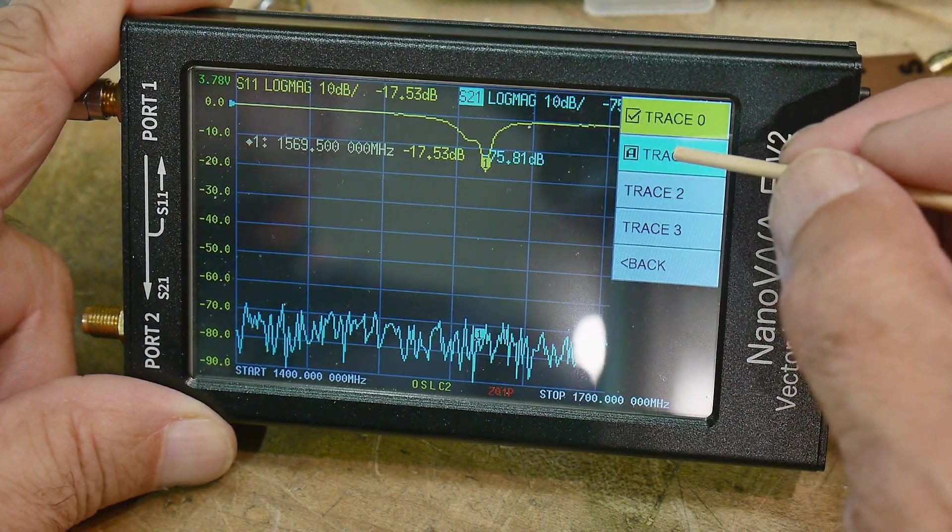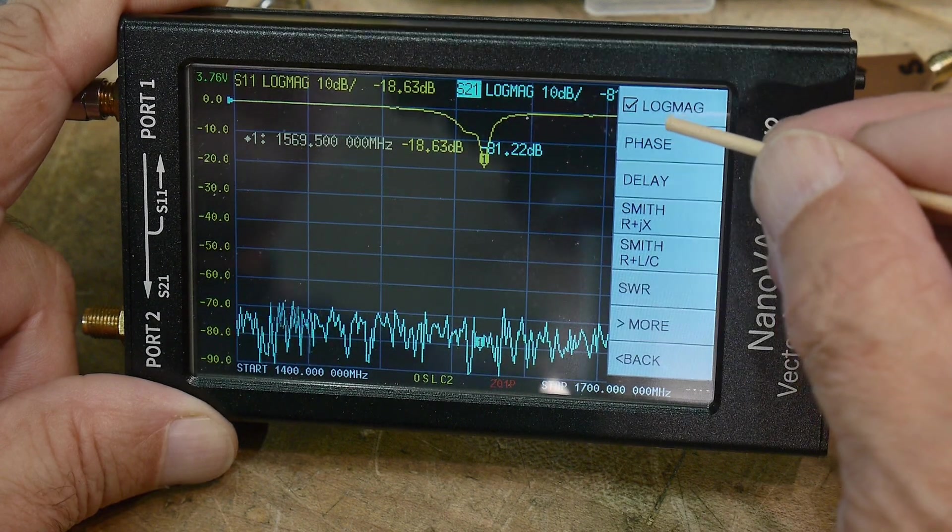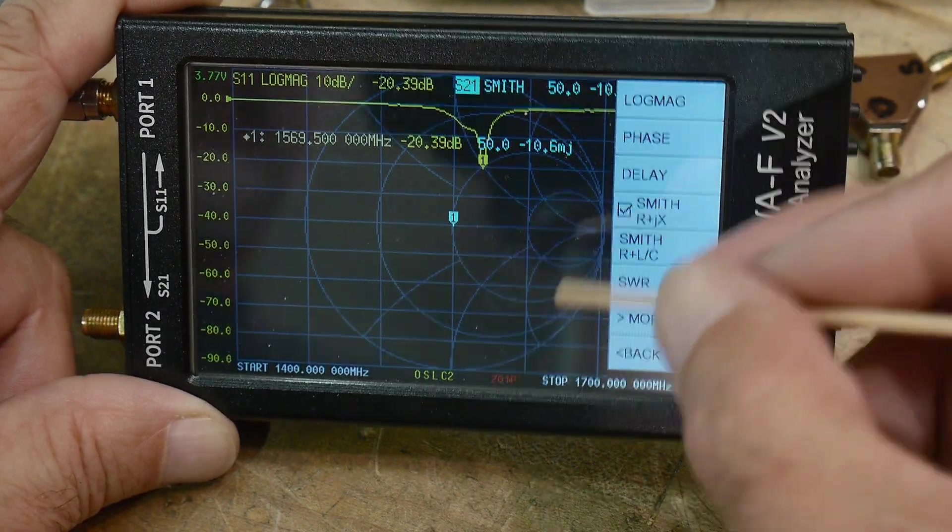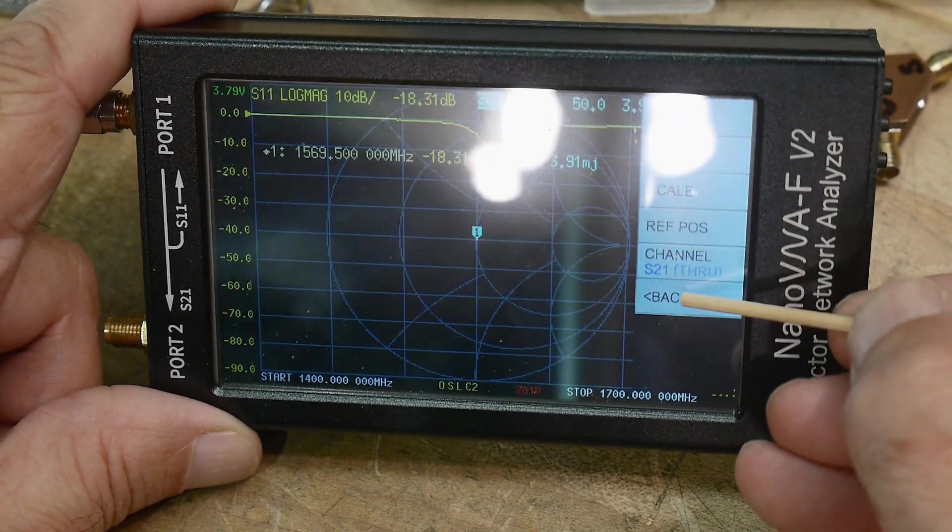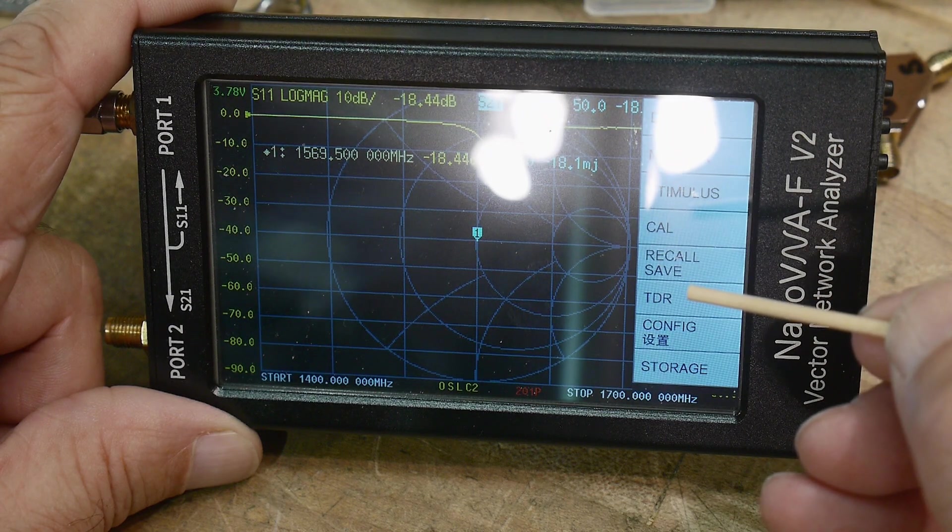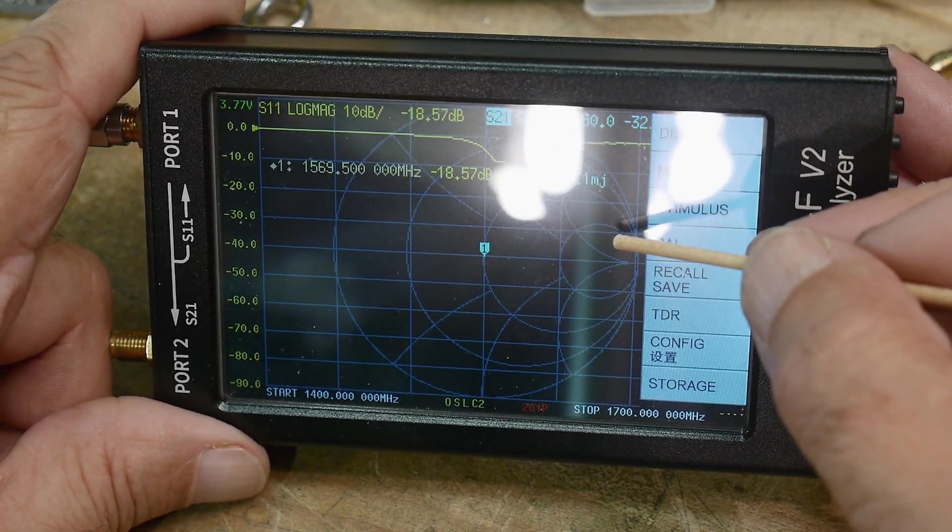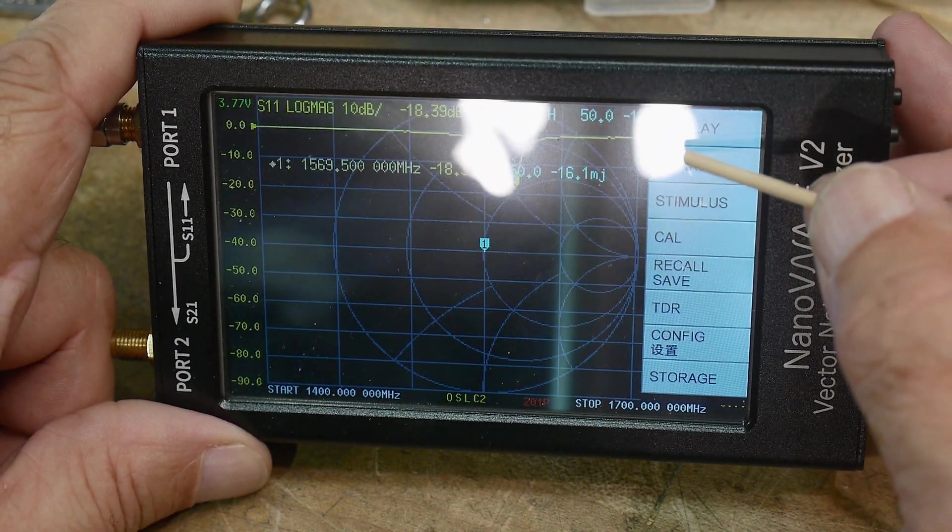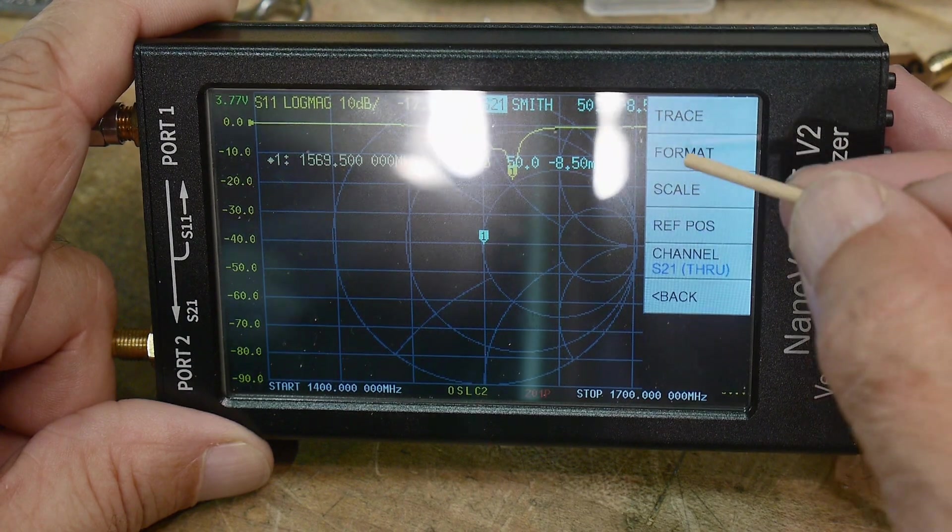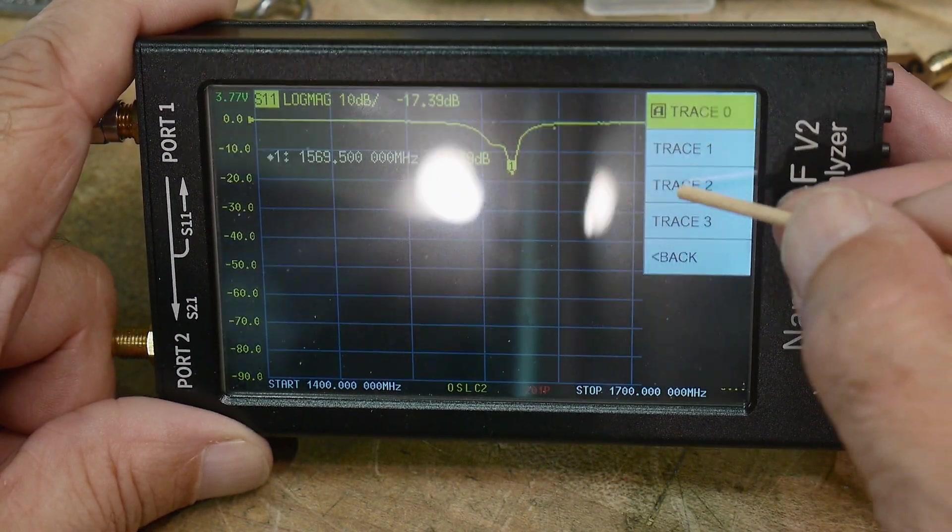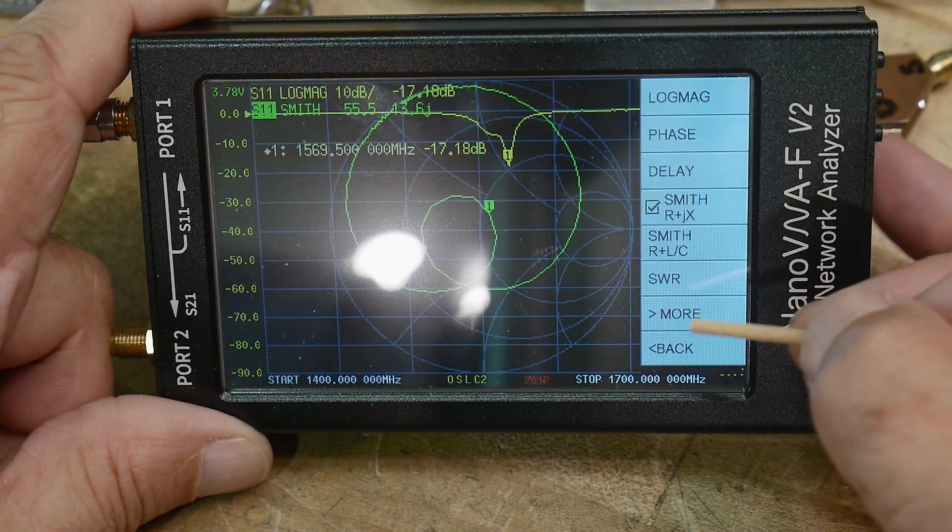I want to do trace one, or is it trace two? Let's do Smith. That doesn't look right. Smith chart 50 ohms. Why isn't it displaying correctly? Can't be perfect 50 ohms there. That's very odd. Let's do trace two, log mag, format Smith. Oh, there we go, that one's working.